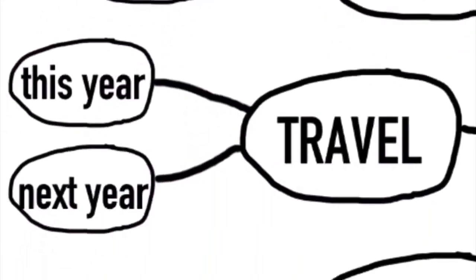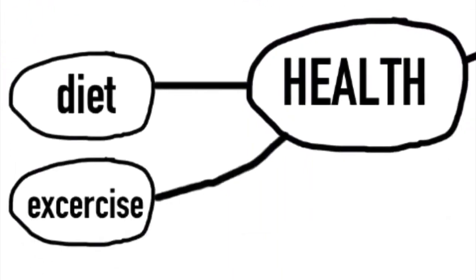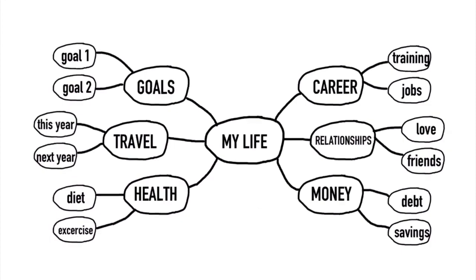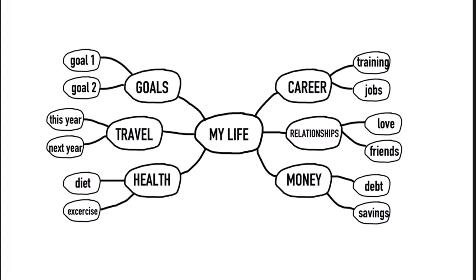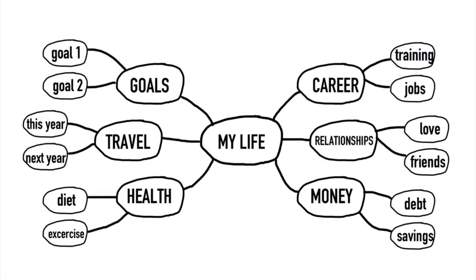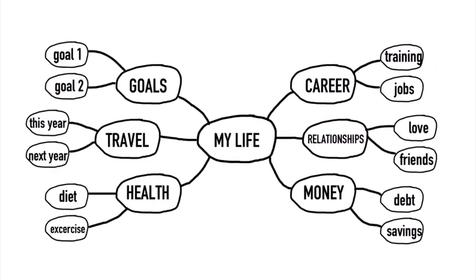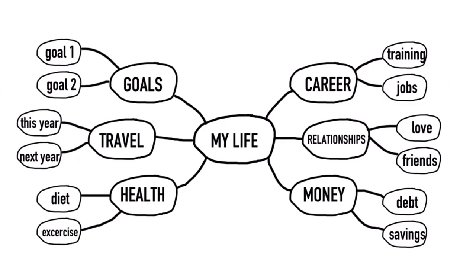For travel, I added two nodes: this year and next year. You may be more focused on travel, so this may be a bigger node for you. For health, I added diet and exercise. I've added two examples for each main node just to keep it simple, but of course you can focus on any of those nodes — like training, for example — and ask yourself what types of training do I want or need, and expand that node into many more nodes. Your mind map really is infinite — you can keep going mapping out your thoughts for as long as you want.